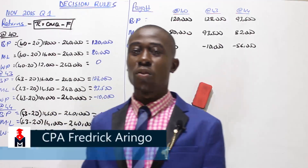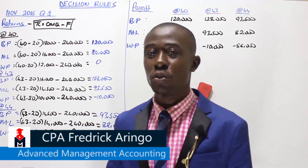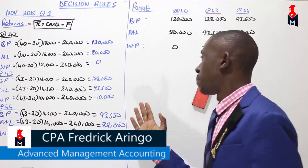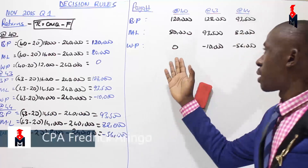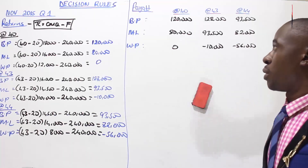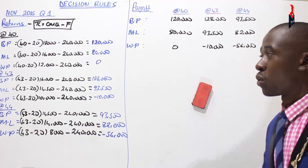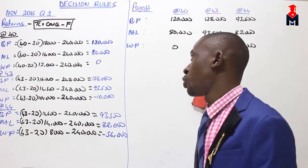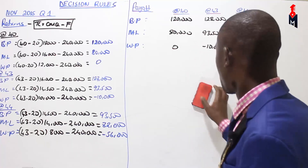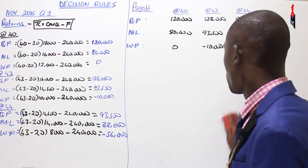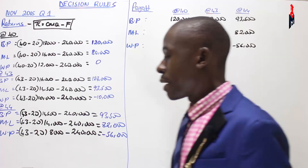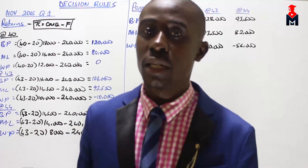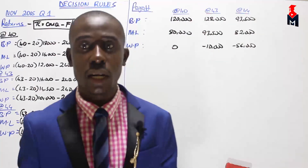Welcome again. This is a continuation of what we were doing earlier. In our previous class, we had prepared our payoff table for the question we were handling — November 2015, question number one. So looking at this case, the next step is to identify the methods that we are requested to work out.